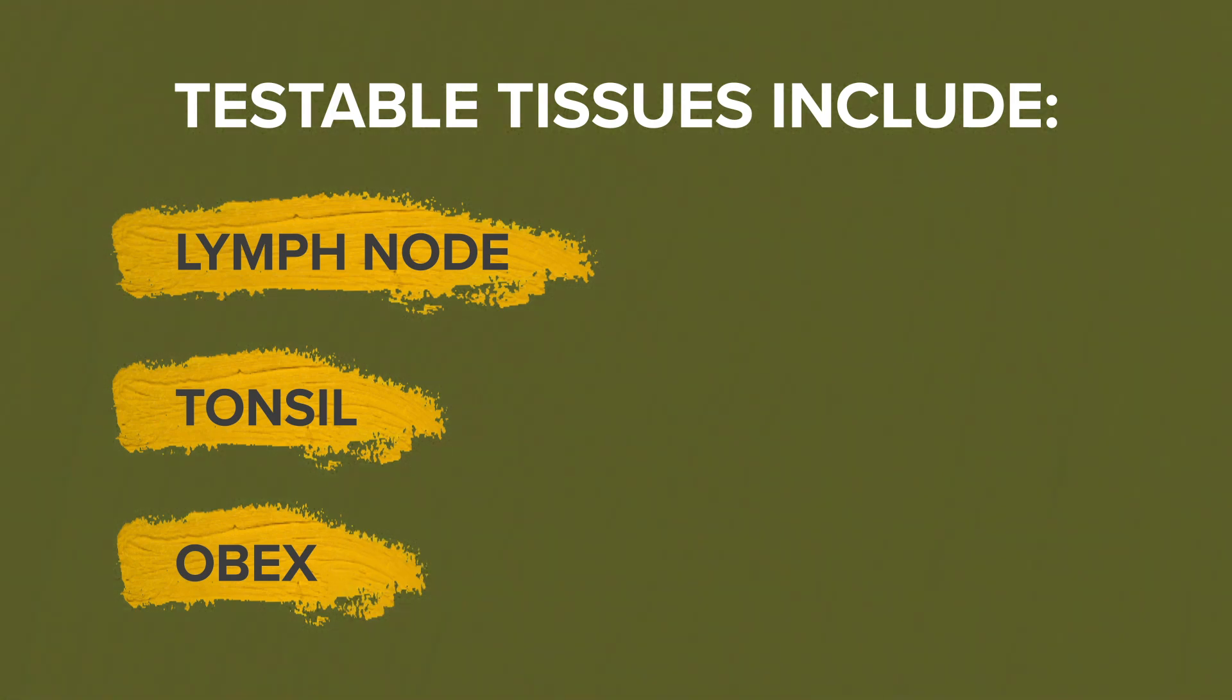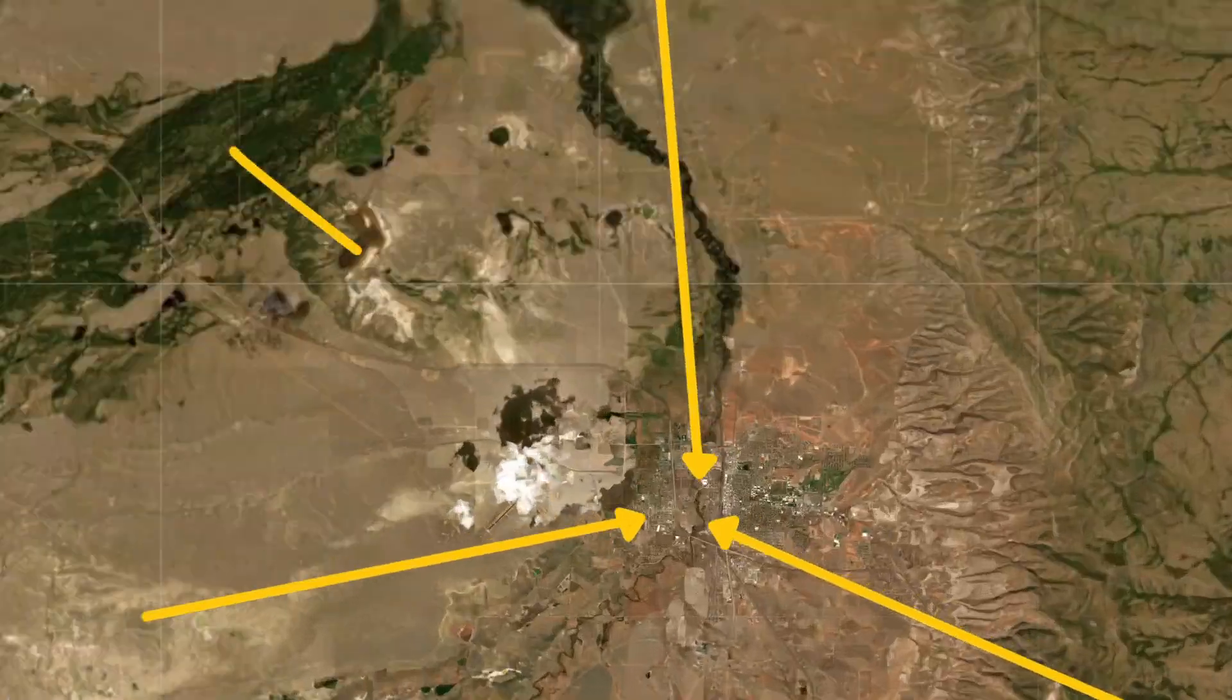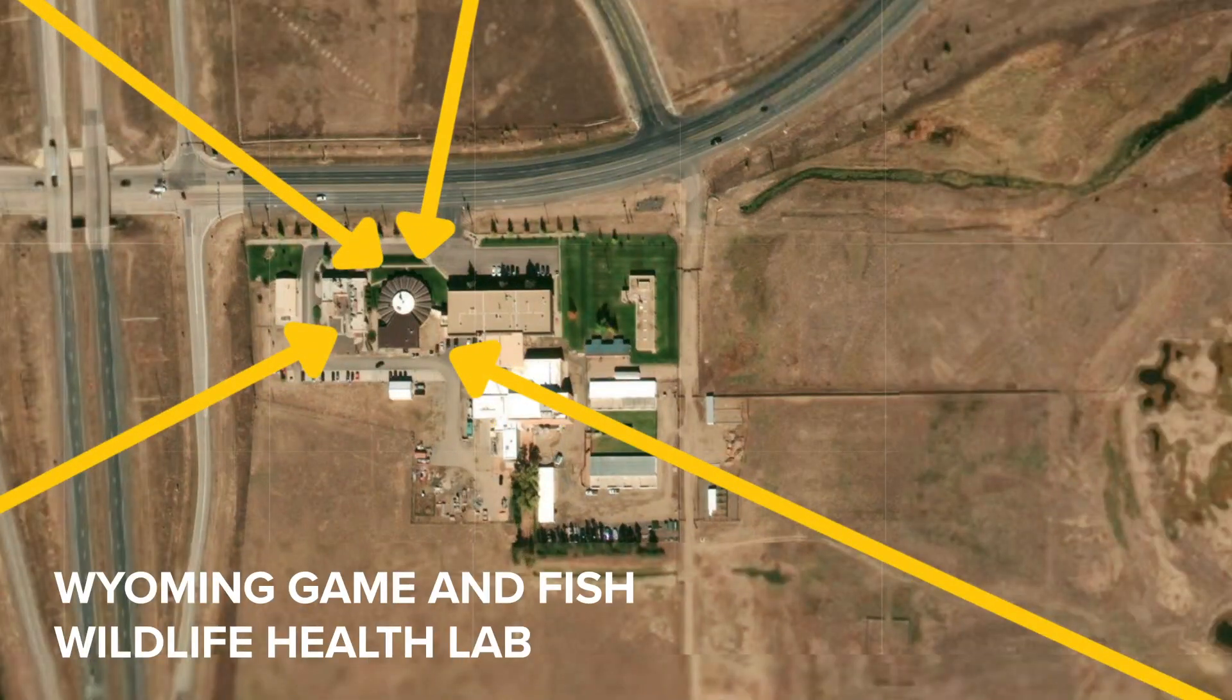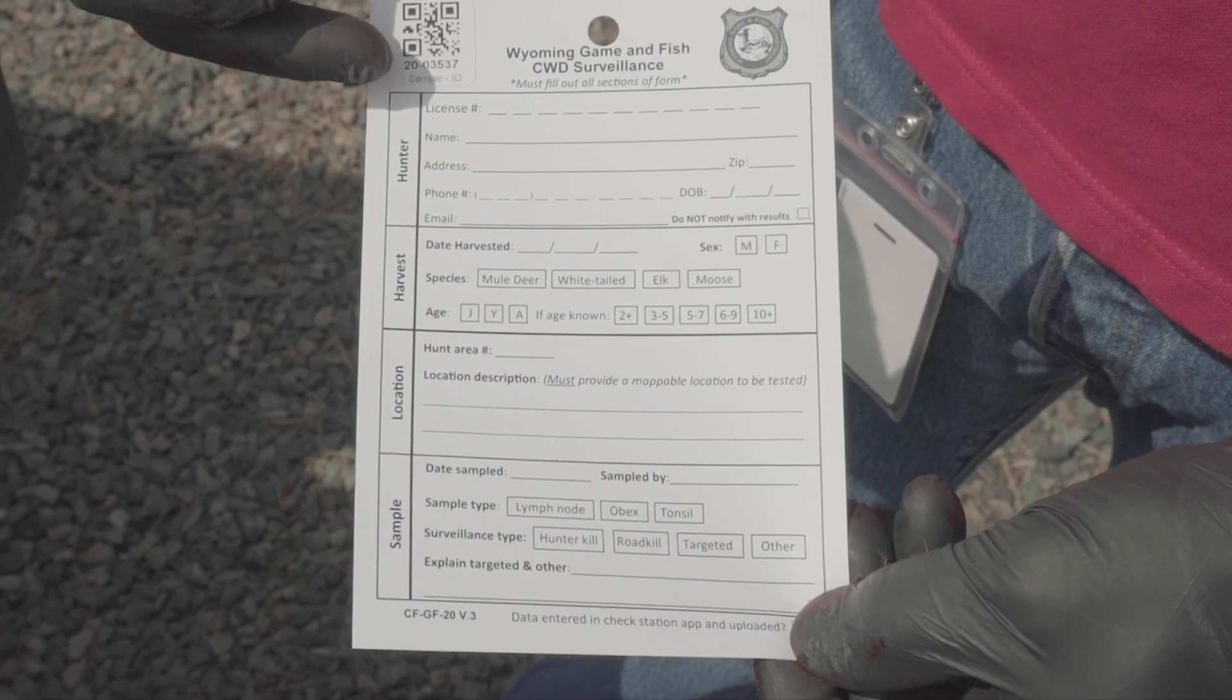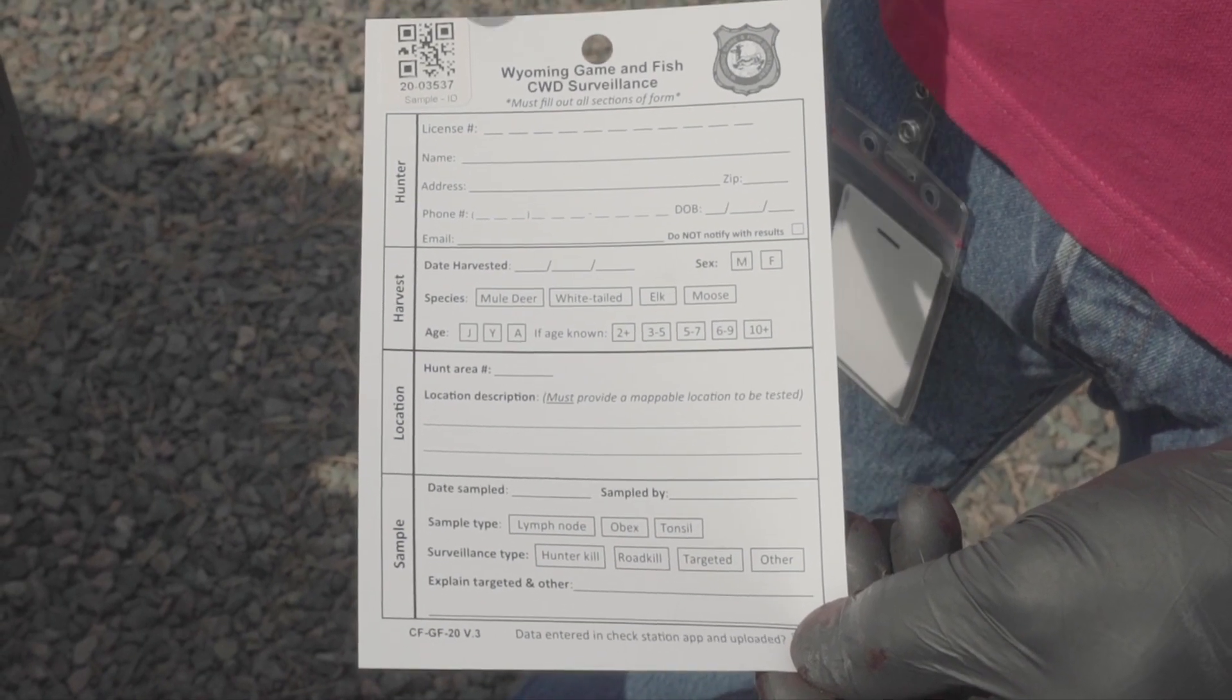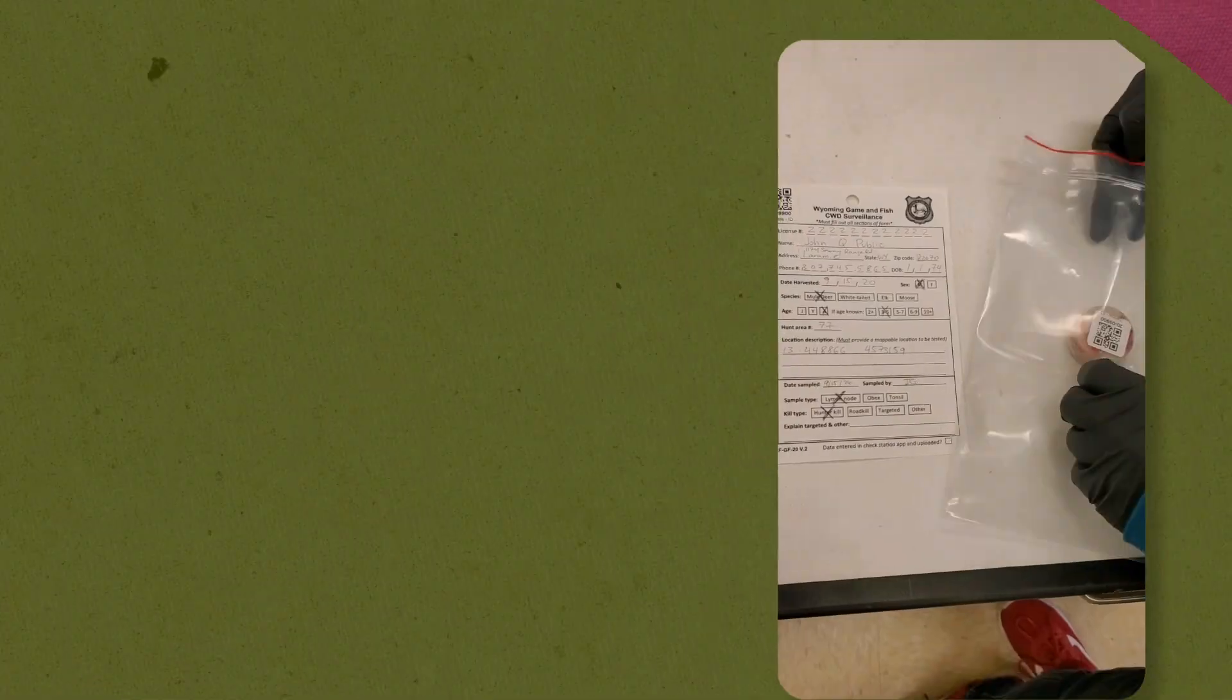Testable tissues include lymph node, tonsil, and OBEX. All samples are sent to the Wyoming Game and Fish Department's Wildlife Health Lab in Laramie with a completed CWD sample tag that includes your personal info and info about the harvested animal.